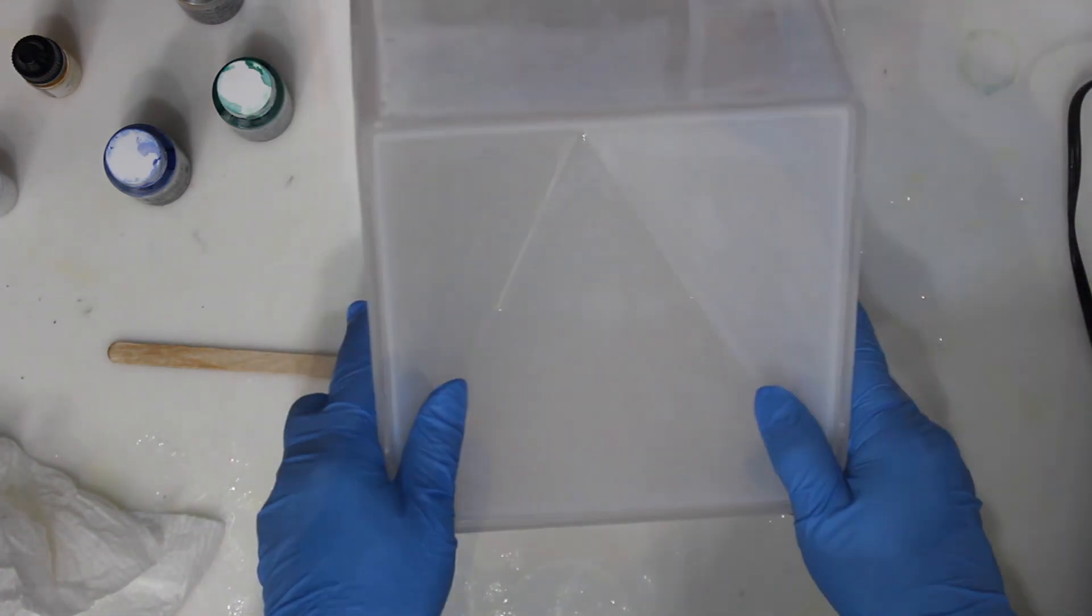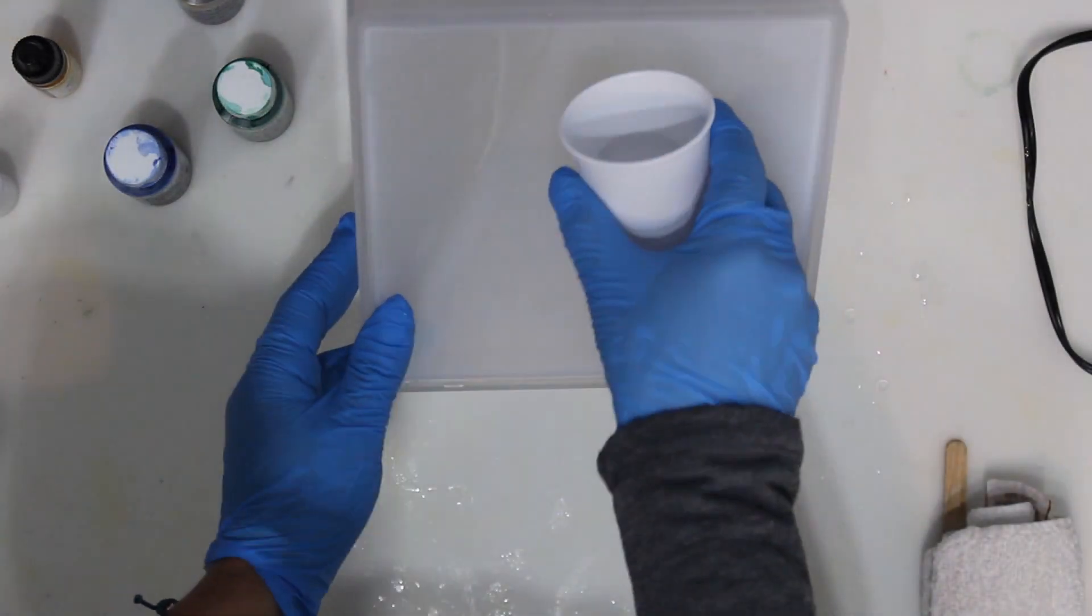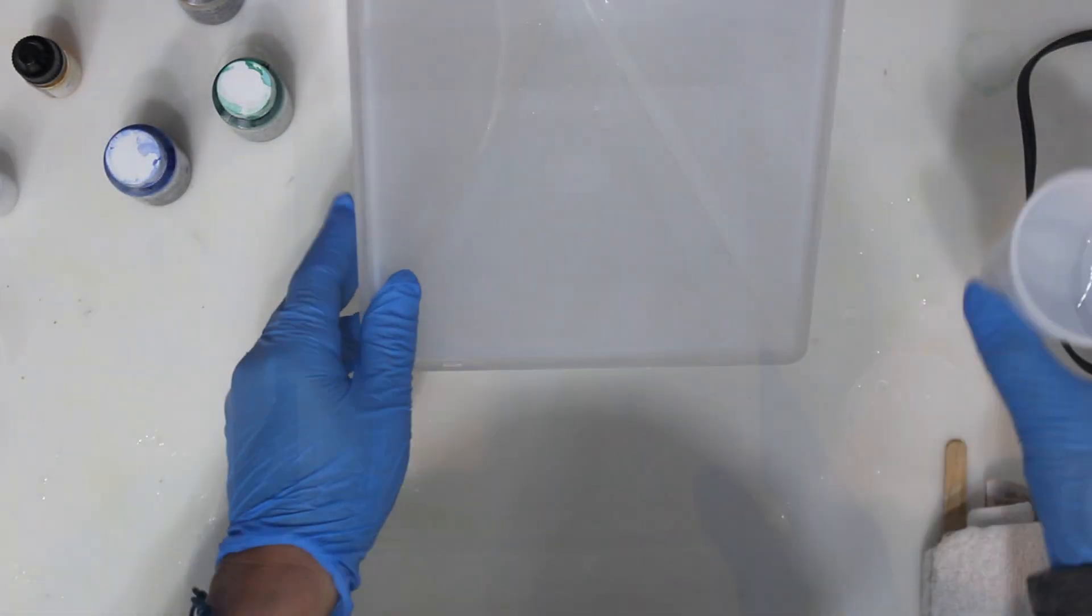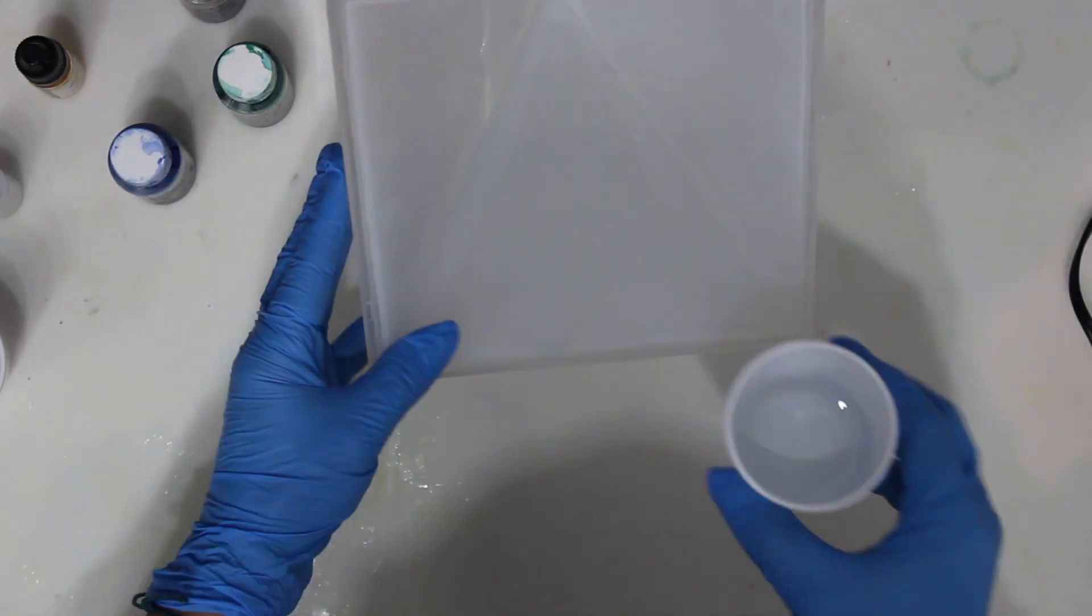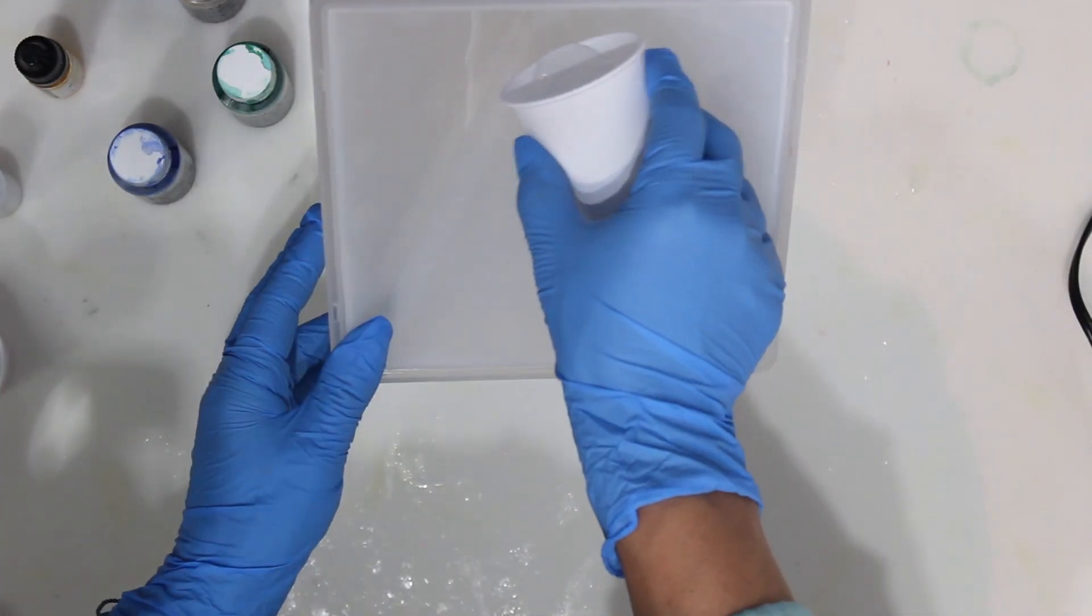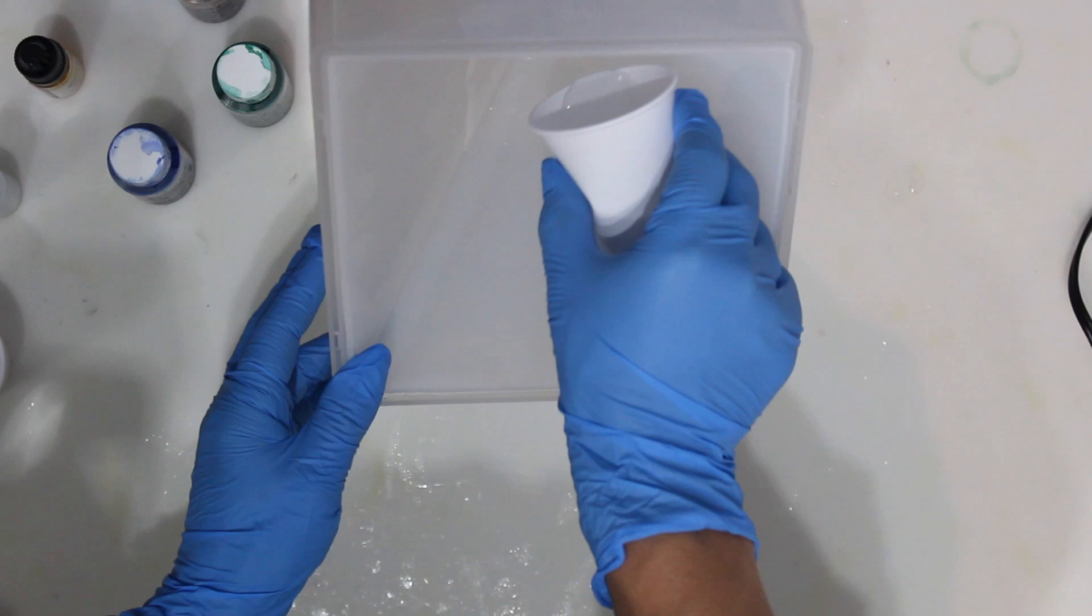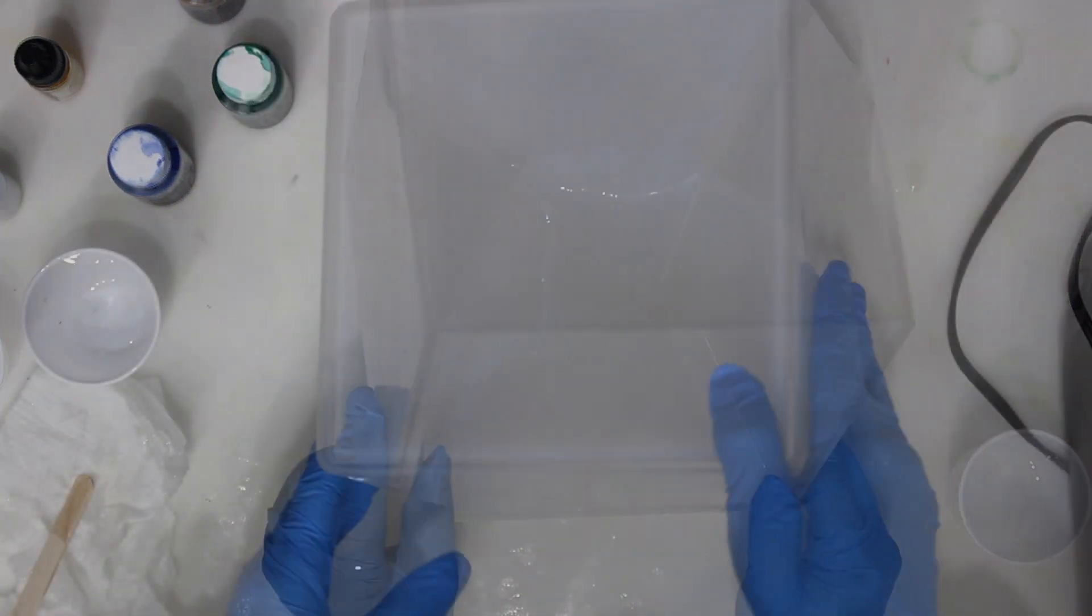And support the mold in a tilted position. After six to eight hours, the resin is cured enough to rotate the mold to the next side and repeat the process. This creates a rigid and strong support for the large planetary energies.